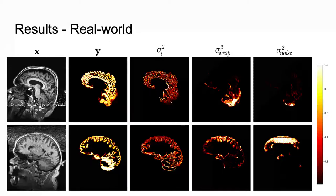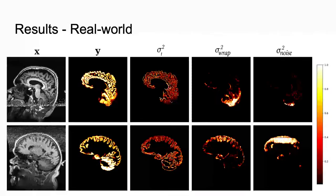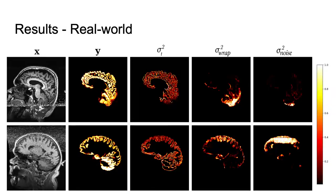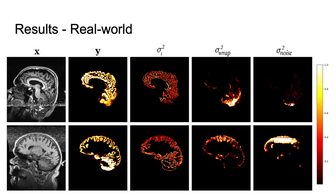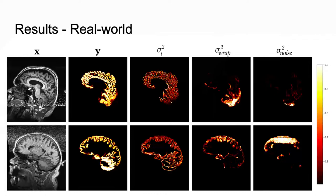In this figure, we show a selection of results on real-world images containing artifacts. Given that the model was trained only on simulated data, the results show that the model is able to somewhat generalize to real-world artifacts, correctly identifying the artifacted areas affecting the image.